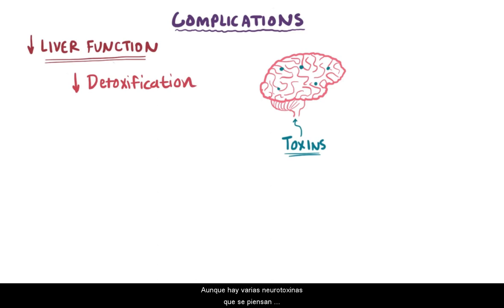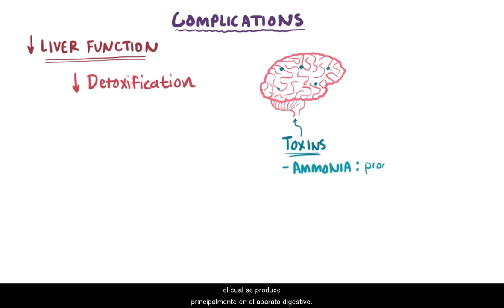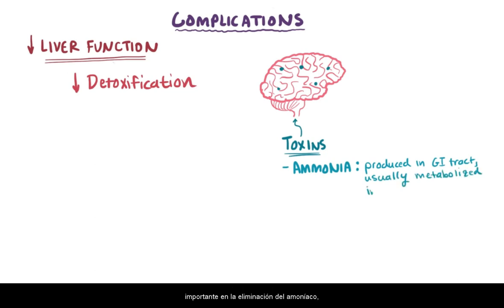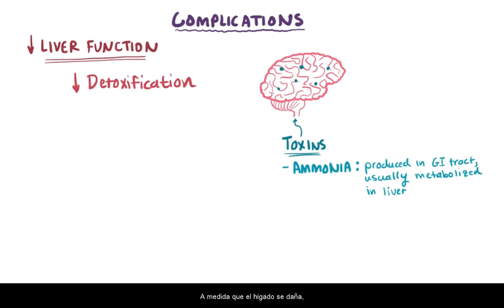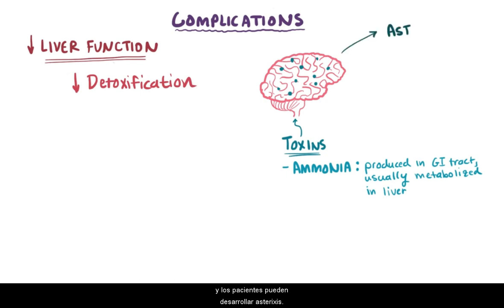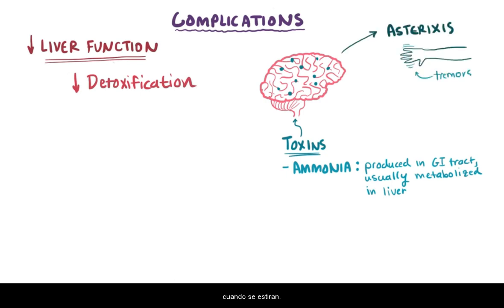Although there are several neurotoxins thought to contribute to these mental changes, the best understood factor is ammonia in the blood, which is produced mainly in the gastrointestinal tract. Usually the liver plays a huge role in removing ammonia and stopping it from going into the systemic circulation. As the liver becomes more damaged, these and other toxins get into the brain, and patients might develop asterixis — tremoring or jerky hands when outstretched. As even more toxins build up, patients can eventually progress to a coma.